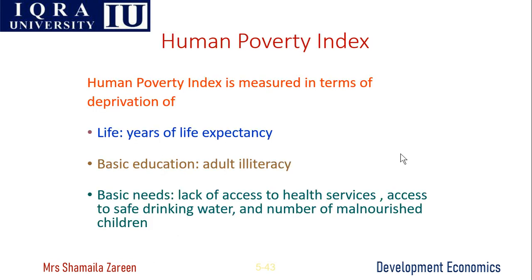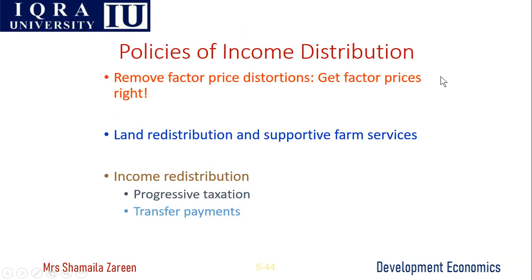The next concept is the Human Poverty Index. Unlike the Human Development Index discussed in the second chapter, the Human Poverty Index is measured in terms of deprivation: years of life expectancy, basic education measured by adult illiteracy, and basic needs including lack of access to health services, clean water, and the number of malnourished children. These three factors are used to measure the Human Poverty Index.